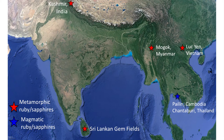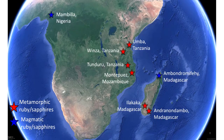Asia has produced some of the most valuable sapphires and rubies, especially those from the mines in Sri Lanka, Mogok, and Kashmir. More recently, metamorphic sapphire and ruby deposits have been discovered in East Africa, in Mozambique, Tanzania, and especially Madagascar, as seen in this map.